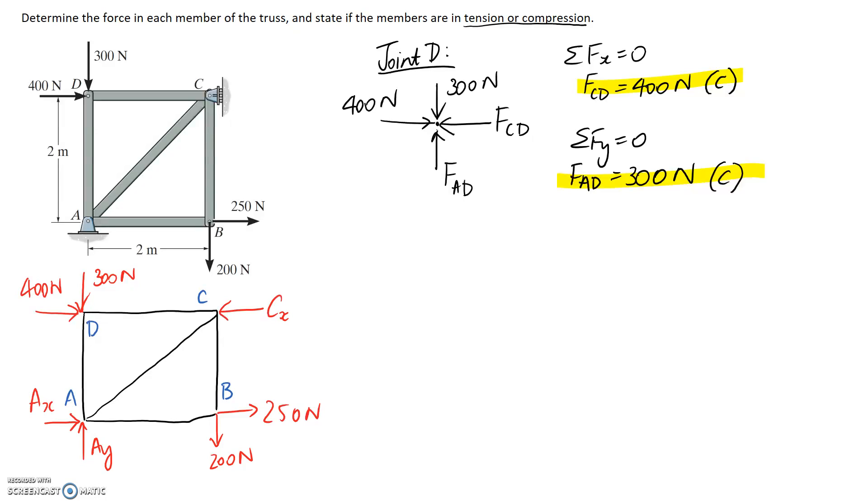We can go back and label these ones we've just found on our diagram. So FCD we said was pushing on the joint so it's in compression. Remember they're two force members so you have to make sure you put both forces on. Both of them are pushing onto the joint and it's going to be 400 newtons. And for AD again it was compression so they're pushing onto the joint and it's 300 newtons.